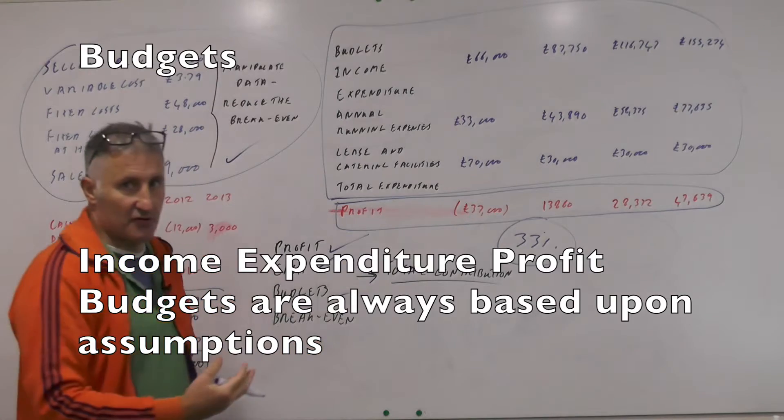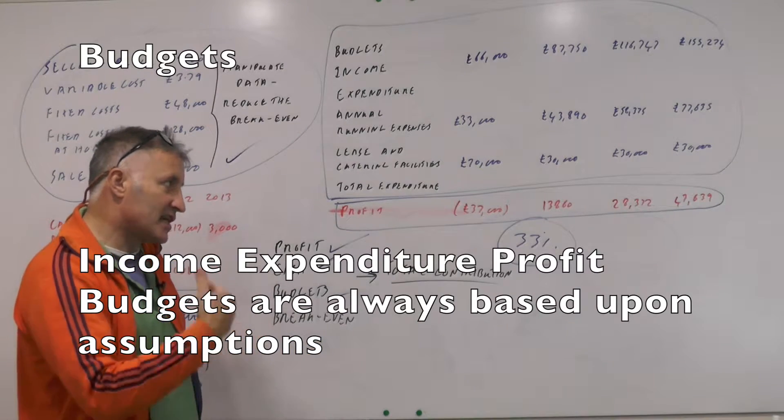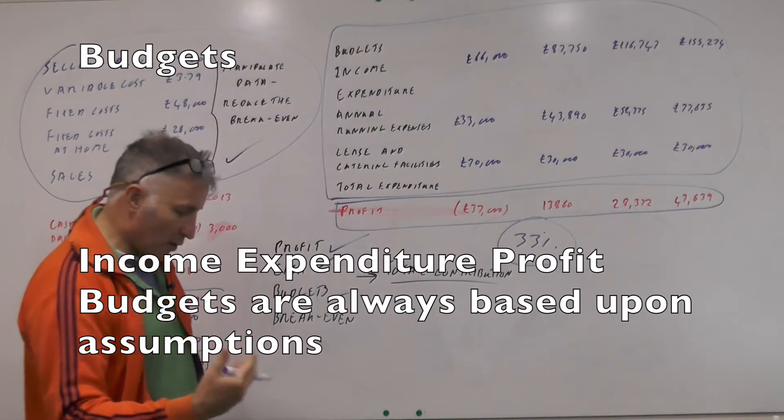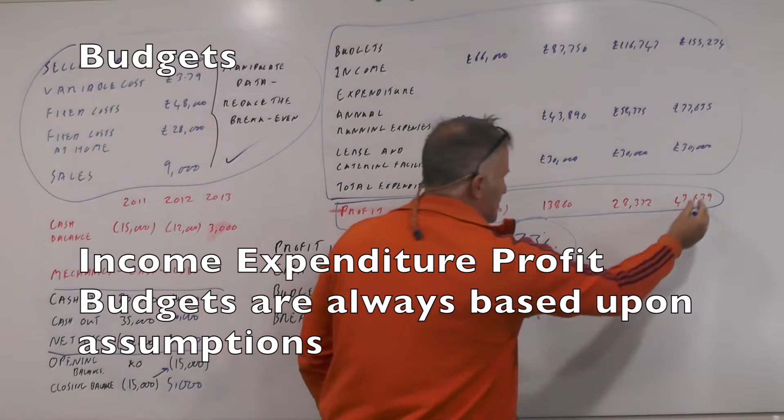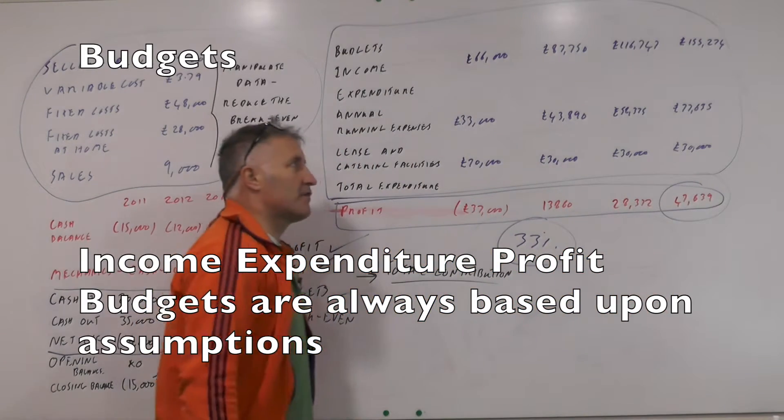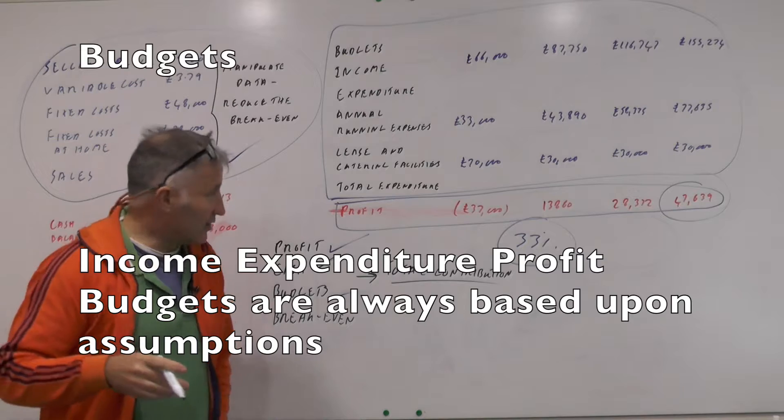However if you work out all the numbers on there those were the profits that were forecast. So you could work those out. Once again you were manipulating data and you could use that data to say well okay it looks as if this is a pretty sound business because we'd eventually be making £50,000 a year in three years.